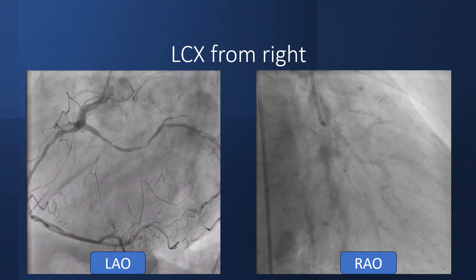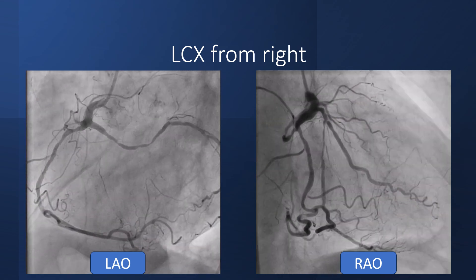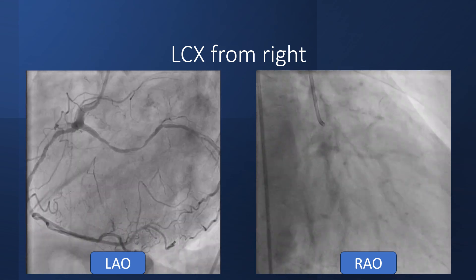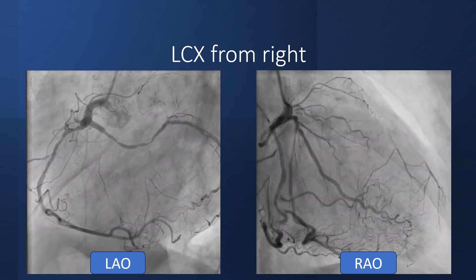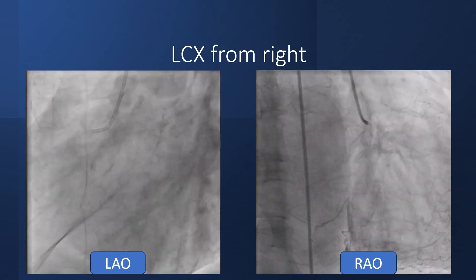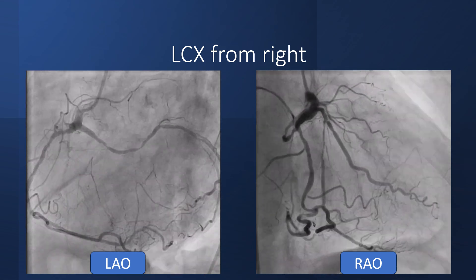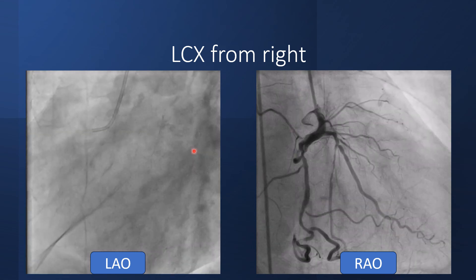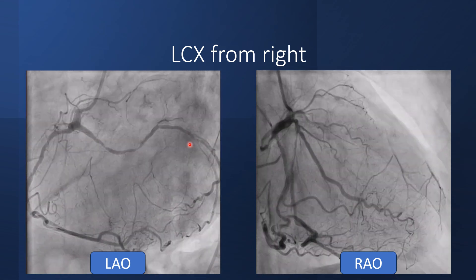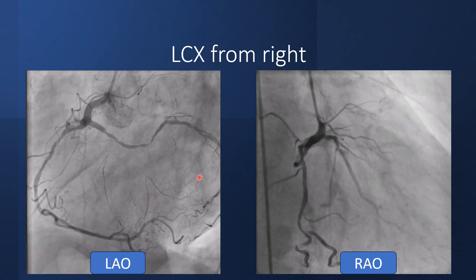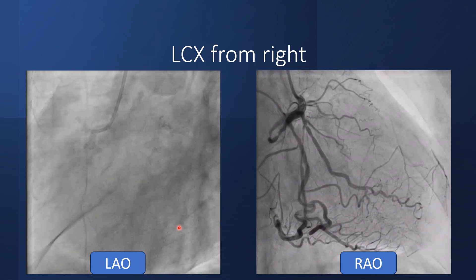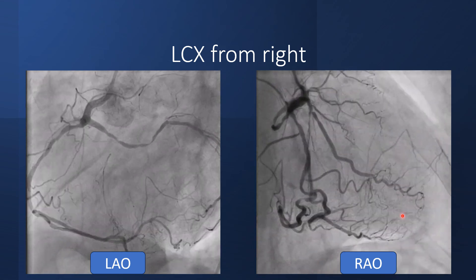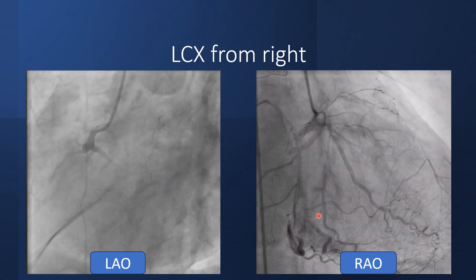Anomalous origin of the circumflex from the right is the most common anomaly and by itself is usually benign. In this patient, the circumflex arises from the proximal RCA and the patient has significant atherosclerosis. The LAO view shows the circumflex taking a long distance from the RCA to the posterolateral part, while in the RAO view, the circumflex overlaps with the RCA.